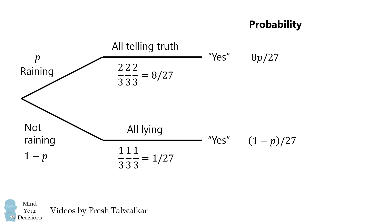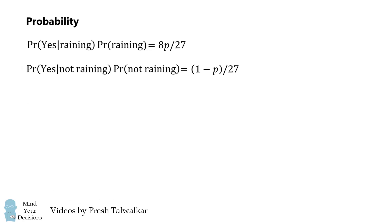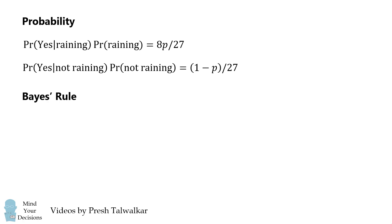The chance that it is actually raining is the probability of the top branch divided by the sum of these two probabilities. Now we can also rewrite these probabilities in terms of conditional probability. This will allow us to express the answer a little bit more formally using Bayes' rule.